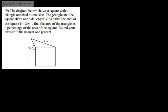In question number 9, we're told the diagram below shows a square with a triangle attached to one side. The triangle and the square share one side length. Given that the area of the square is 49cm², we're asked to find the area of the triangle as a percentage of the area of the square, rounded to the nearest 1%.